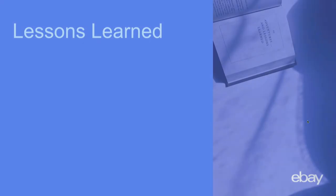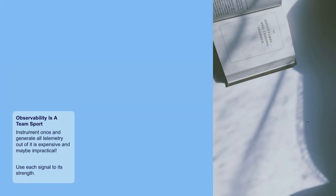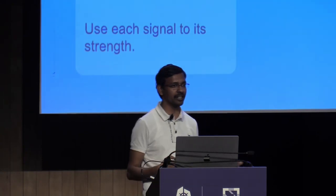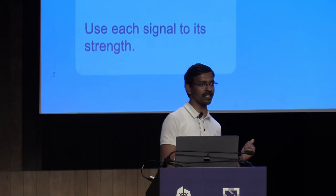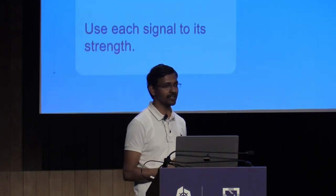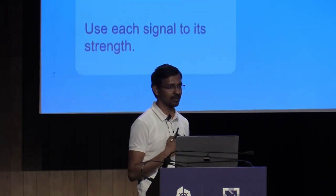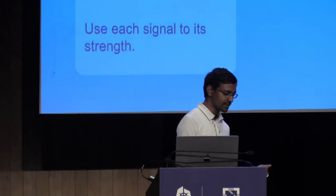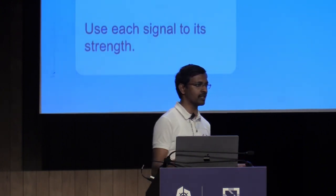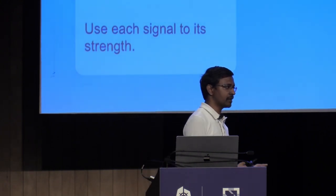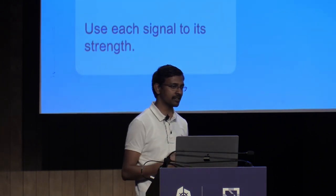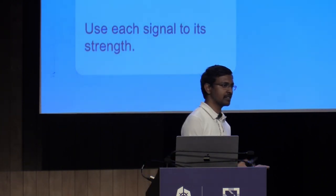What are the lessons that we learned? The first thing: observability is a team sport. Use all the pillars effectively and don't try to use one pillar to derive everything. In our case, the metrics platform and the trace platform are tightly knit together because metrics now provide the signal on what needs to be sampled and what does not. At the same time, all our P1 observability and P1 detection functions are strictly done just by metrics; we don't try to use the other pillars.